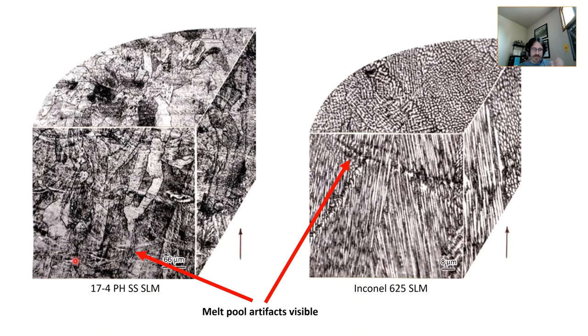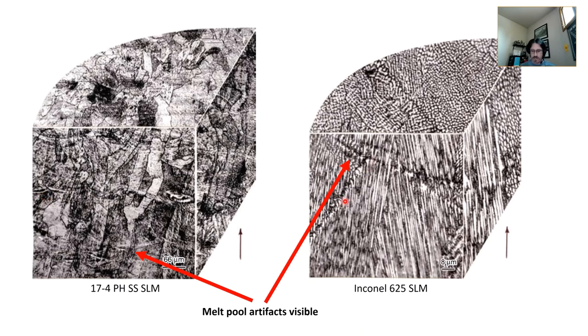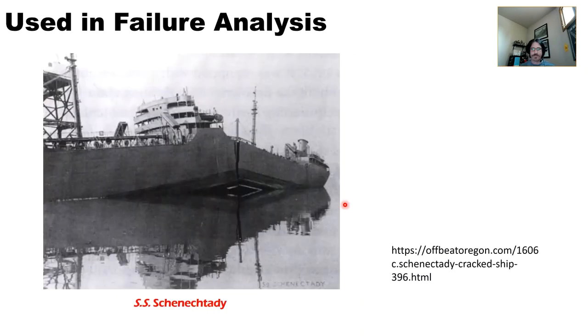The melt pool artifacts represent where the beam hit and created a pool of molten metal — we're seeing that leftover artifact on these micrographs. The difference between wrought and cast is one thing, but these melt pools are signature of additive manufacturing.